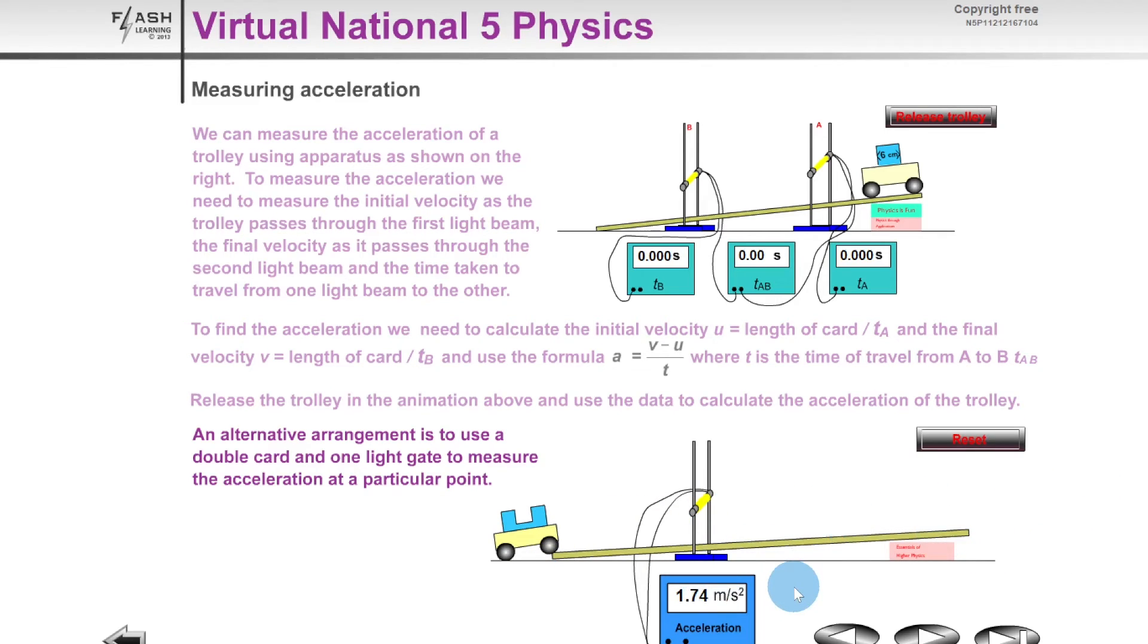So in this specific example we've got an acceleration which has been output by the TSA timer of 1.74 meters per second squared. So that means the velocity of the trolley is increasing by 1.74 meters per second every second.